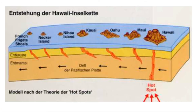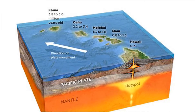Islands form over a hotspot beneath the tectonic plate. Volcanoes build underwater peaks that eventually reach above sea level. As the Pacific plate continues moving northwest, the islands age.